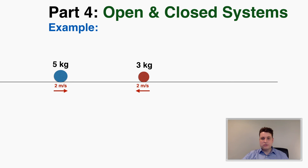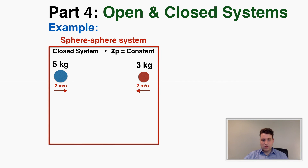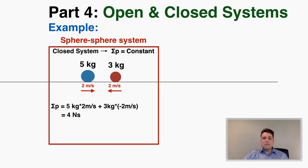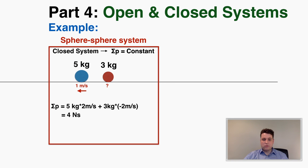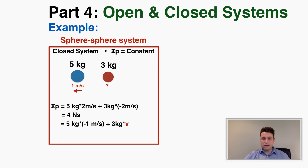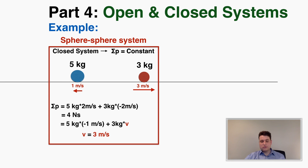I'll show a quick example of using a closed system. In a sphere-sphere system where two things move toward each other and only put forces on each other, I can calculate the total momentum before using momentum equations, calling left negative. I find the total momentum is 4 newton seconds. After they hit each other and bounce away, the 5 kilogram object is moving 1 meter per second to the left, and I want to find the velocity of the 3 kilogram sphere. Using conservation of momentum: 5 kg × (−1) + 3 kg × v = 4 newton seconds, giving a final velocity of positive 3 meters per second — the 3 kilogram sphere moves 3 m/s to the right.